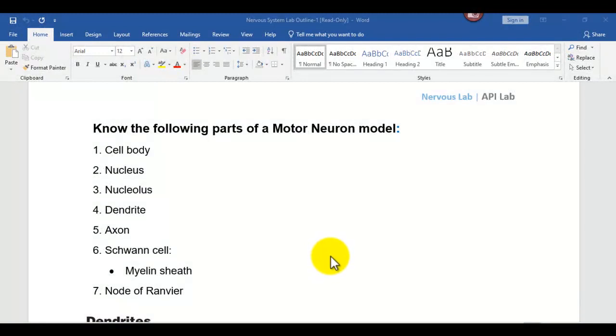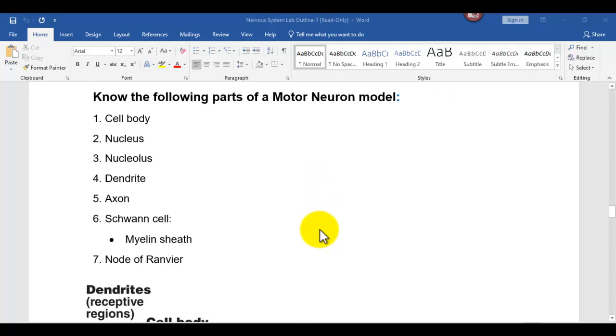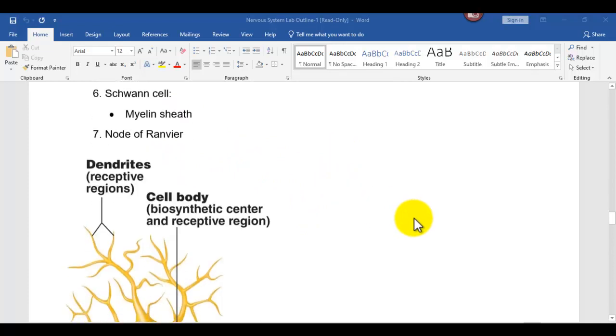This video is going to cover the parts of what's called a motor neuron model. Nerves are composed of neurons, and this one we're looking at here is actually what's called a multipolar neuron.